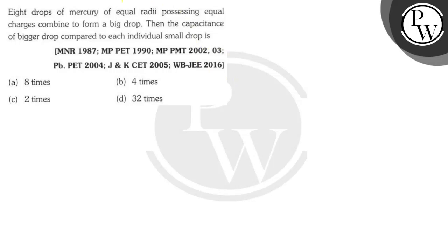Hello Vatram, let's read the question. Eight drops of mercury of equal radii possessing equal charges combine to form a big drop. Then the capacitance of bigger drop compared to each individual smaller drop is. So initial capacitance for a drop will be 4πε₀r₀.